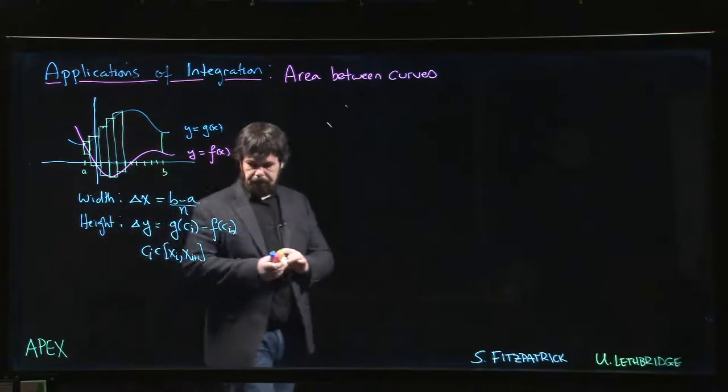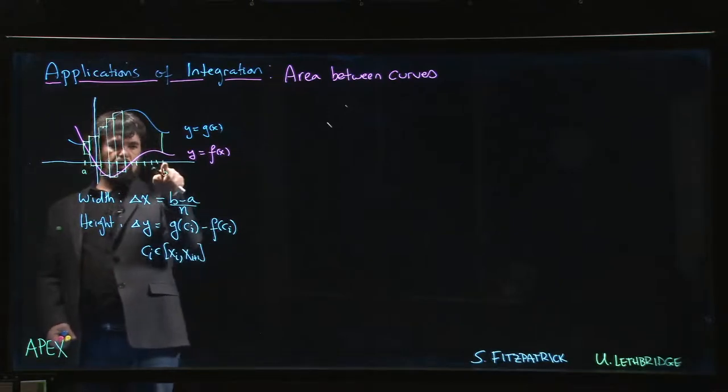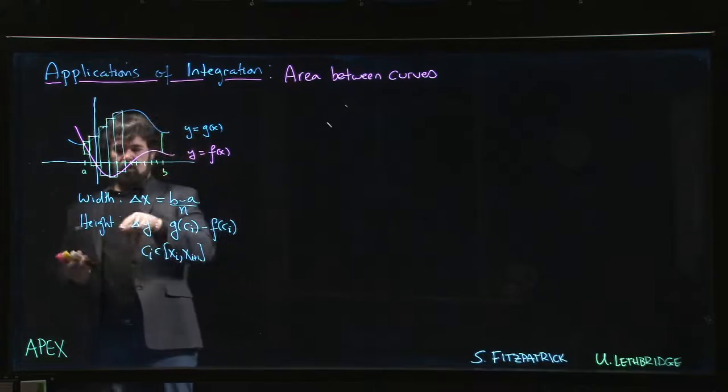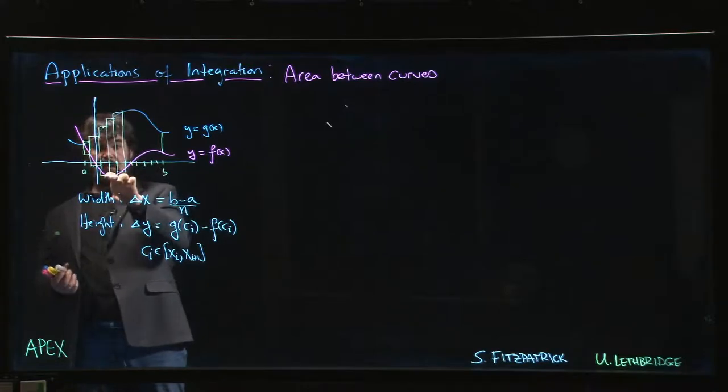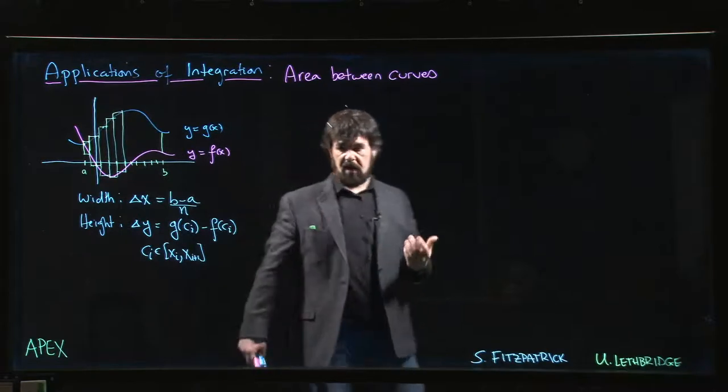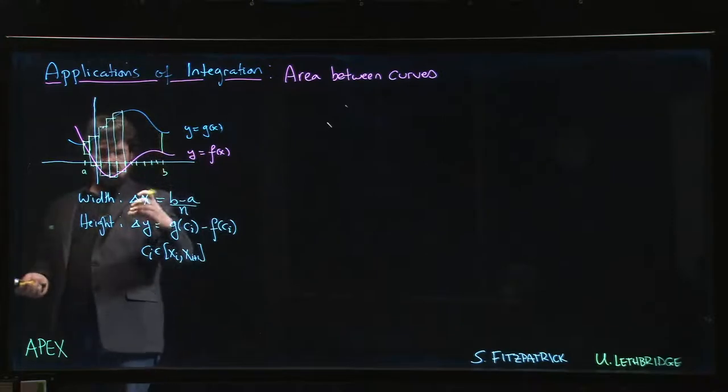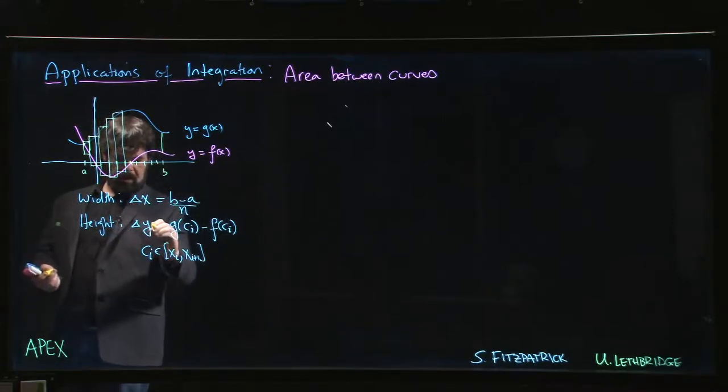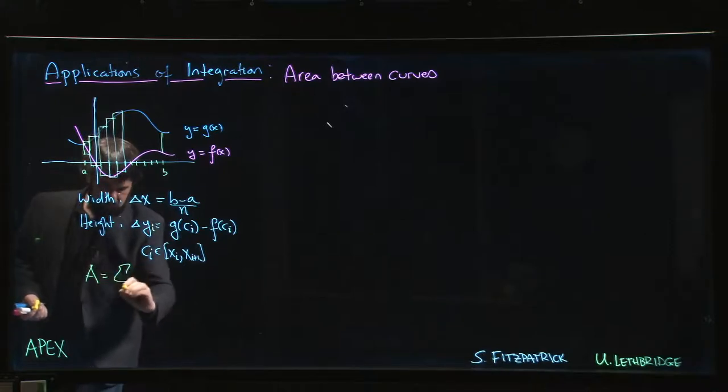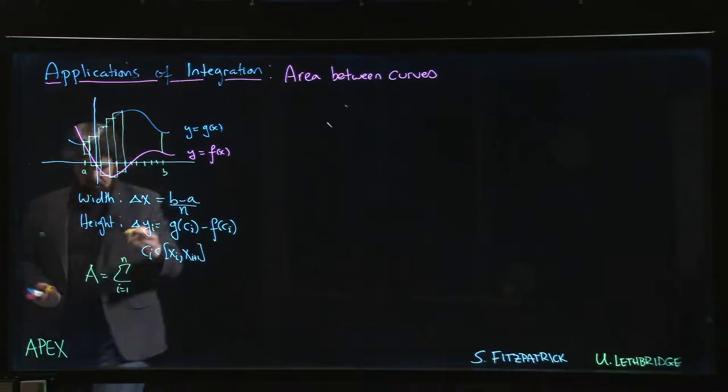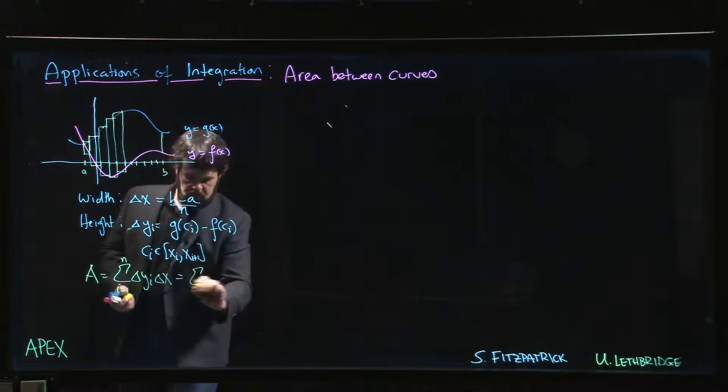Where ci is going to be some point that's between xi and xi plus one. Usual story - i starts at one, two, three, four up to n, and we have n rectangles. For each rectangle we get the height by choosing a point, calculating the difference between the y value here and the y value there - subtracting is how we get the difference between those two y values. That gives the height, we get the area of the rectangle. So the total area is going to be a sum, i going from one to n, of your delta yi times delta x.